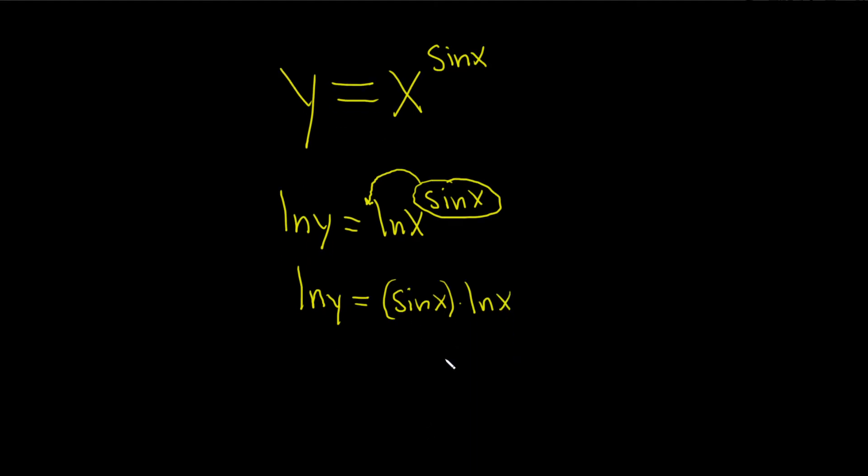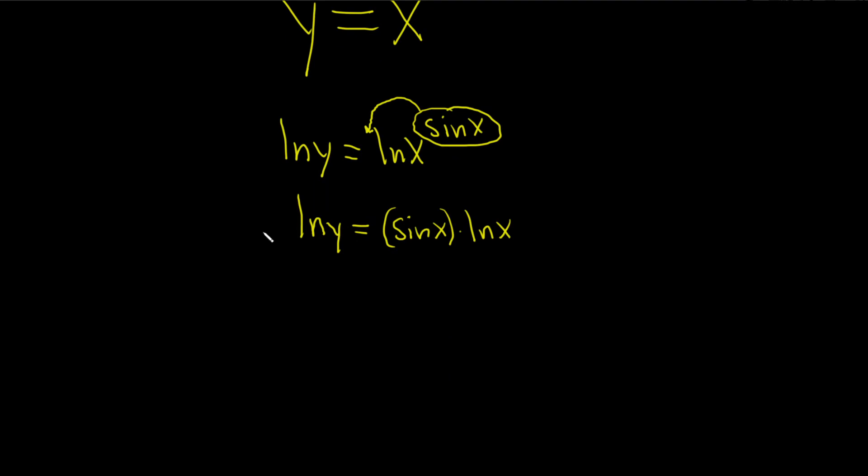The next step is to now take the derivative. So on the left-hand side, when we take the derivative, we just have to use the chain rule. Remember, the derivative of the natural log of x is 1 over x. But here it's the natural log of y, and y is an unknown function of x.